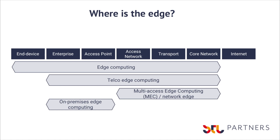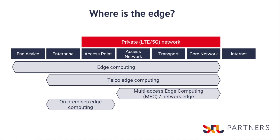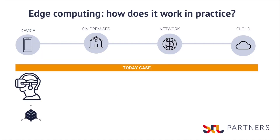On-premise edge computing retains sensitive data on site while still taking advantage of the elasticity offered by the edge cloud. With each of these, telcos may decide to use the public network or provide a private network for a specific set of users. We have seen interest in this from particular industries in specific markets, such as manufacturing in Germany.